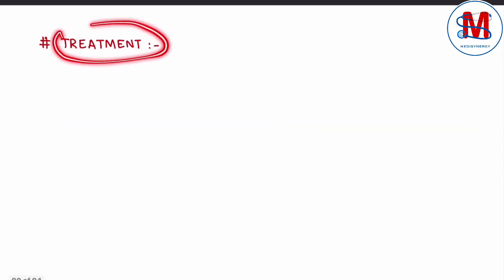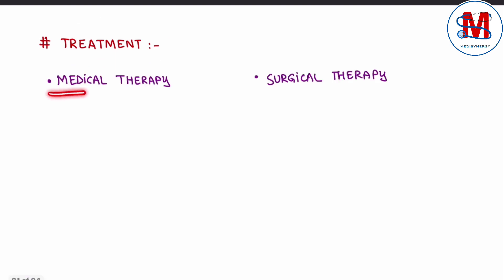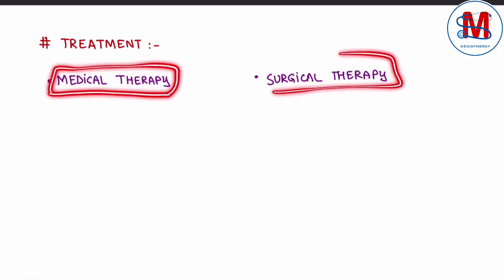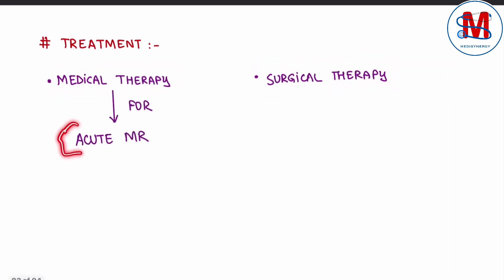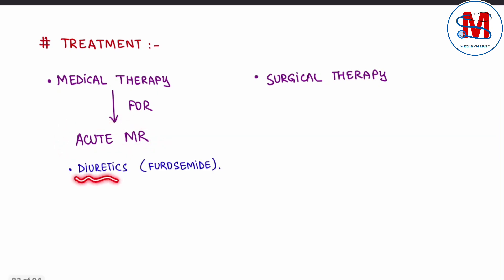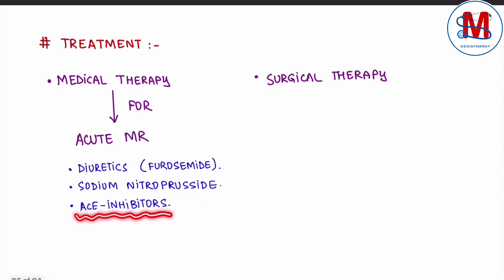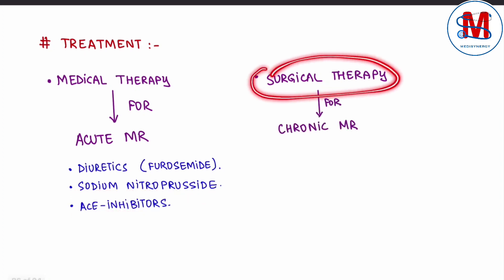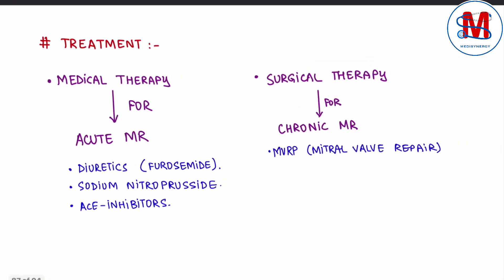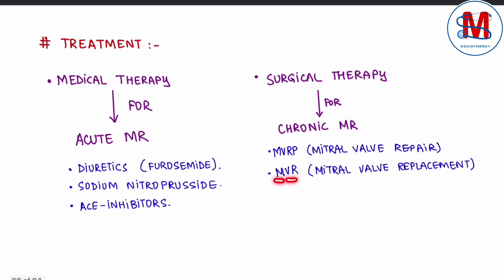Now let's discuss the treatment of mitral regurgitation. We have medical therapy and surgical therapy. Medical therapy is used in acute MR — we give diuretics like furosemide, sodium nitroprusside, and ACE inhibitors. Surgical therapy is done for chronic MR — that is MVR-P (mitral valve repair) or MVR (mitral valve replacement).